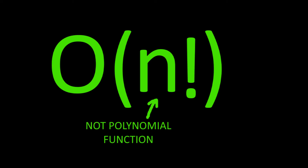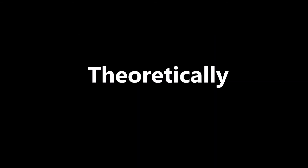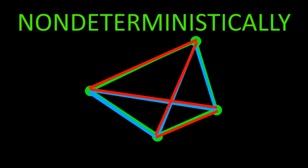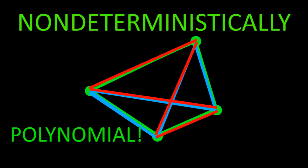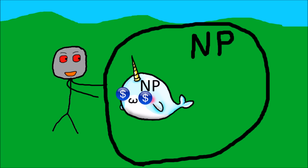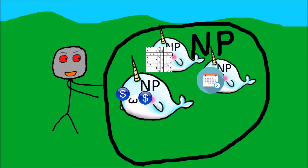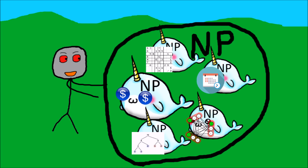You may have noticed something: N factorial is not a polynomial function. However, theoretically, if we could execute this algorithm non-deterministically — meaning we check all possible routes simultaneously — we can solve this problem in polynomial time. This is why the traveling salesman problem, as well as problems like solving Sudoku, scheduling, integer factorization, and many others are NP.